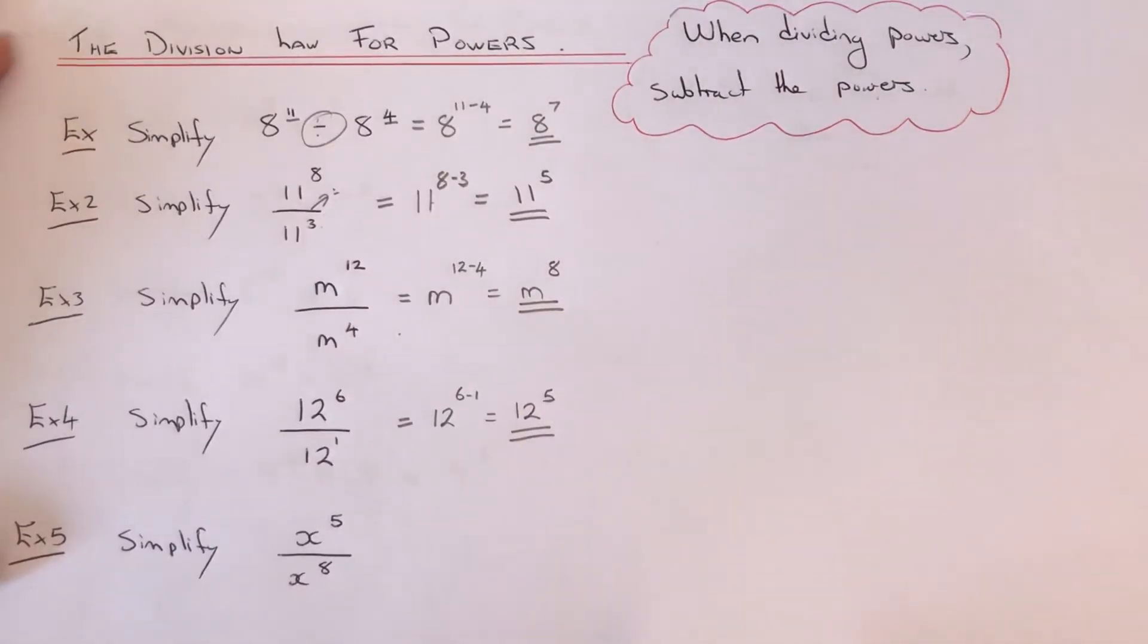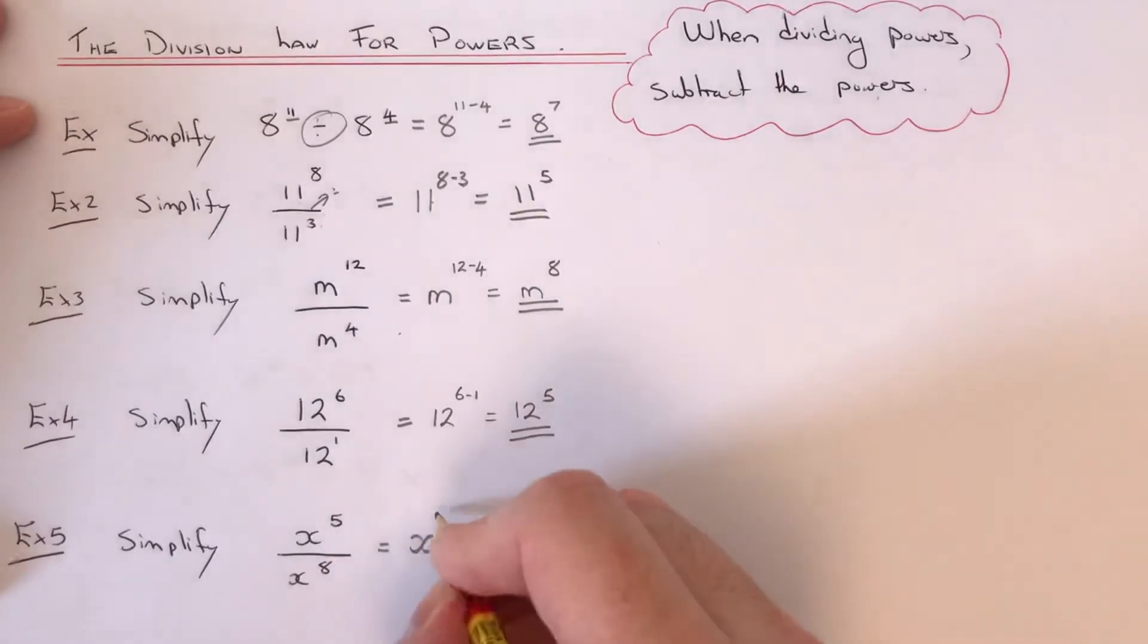Our final example: we've got x to the power of 5 divided by x to the power of 8. Again, keep the base letter the same. This time we've got to do 5 take away 8.